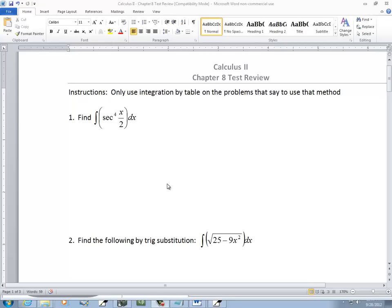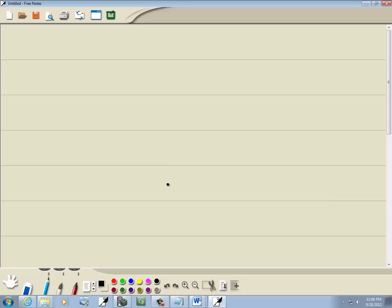Let's take a look at our first problem type. We've got the integral of secant to the fourth of x over 2, secant to the fourth of x over 2, dx.